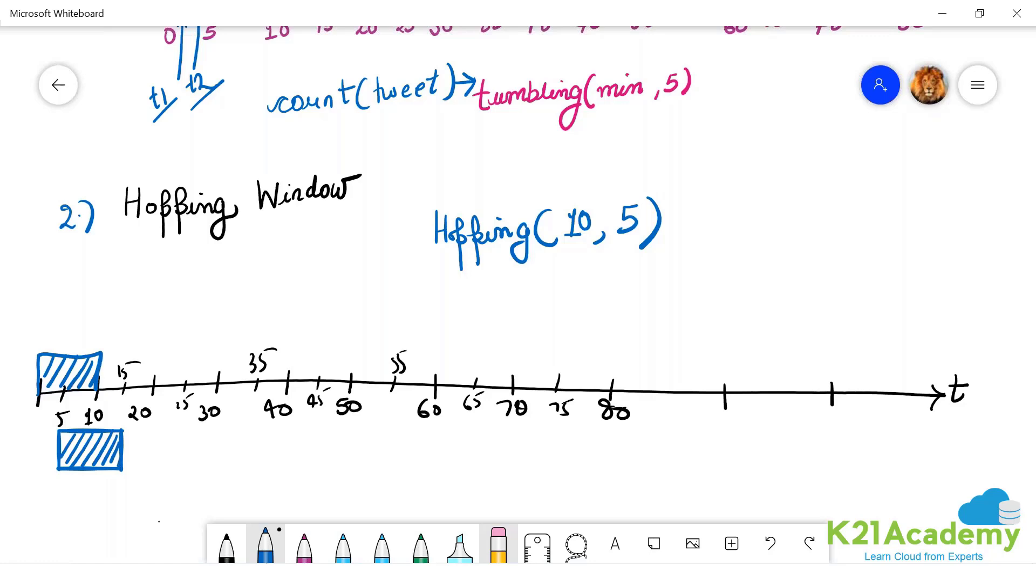It hops every 5 minutes, so the next window will start from 5 and will run till 15. Next window will start at 10 and will run till 20. It's a hopping window: window one is 0 to 10, second window is 5 to 15, third window is 10 to 20. I'm getting a little bit confused here, so 0 to 10 will be the first window. Next will run from 5 to 15, next will be 10 to 20, next will be 15 to 25, likewise.